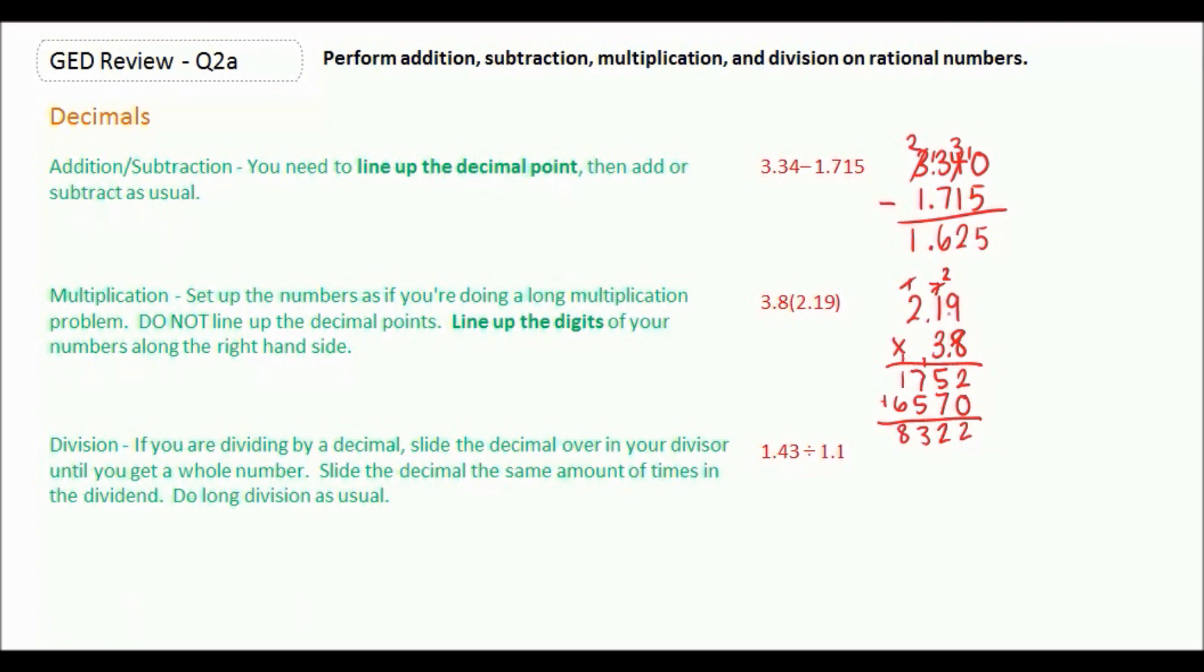And now we're going to count how many decimal places were in our question. We had 2 decimal places here and 1 here. So our answer is going to have 3 total decimal places. So 1, 2, 3. So 8.322.